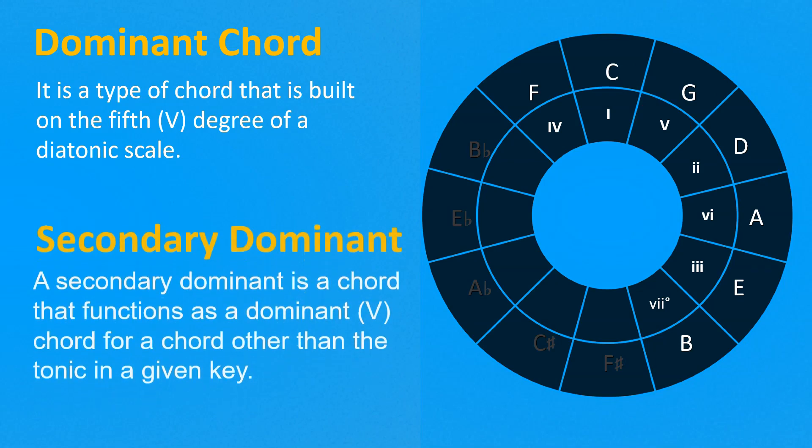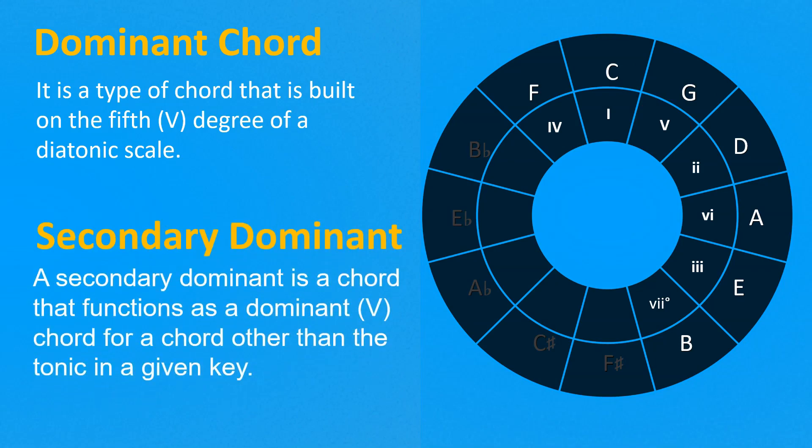And what is a secondary dominant? A secondary dominant is a chord that functions as a dominant chord for a chord other than the tonic in a given key. This concept is used to create tension and enhance harmonic interest in music. Essentially, it allows composers to emphasize a chord within a diatonic progression by treating it as if it were the tonic of a different key.